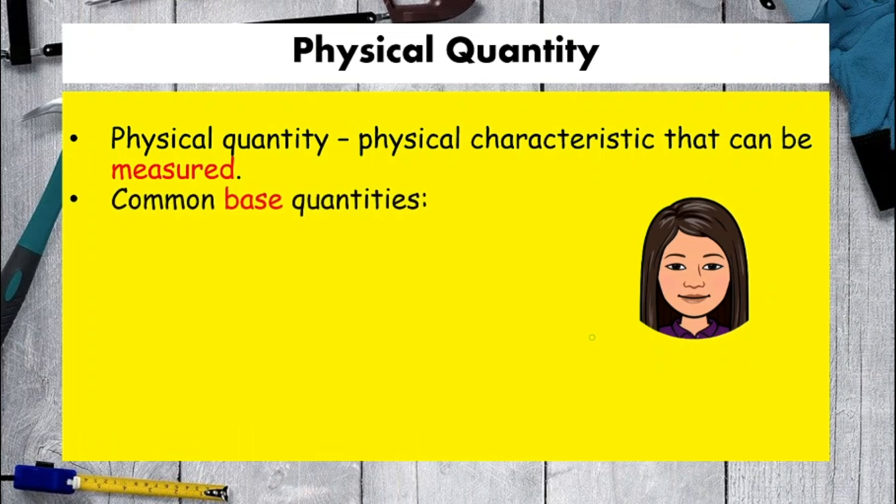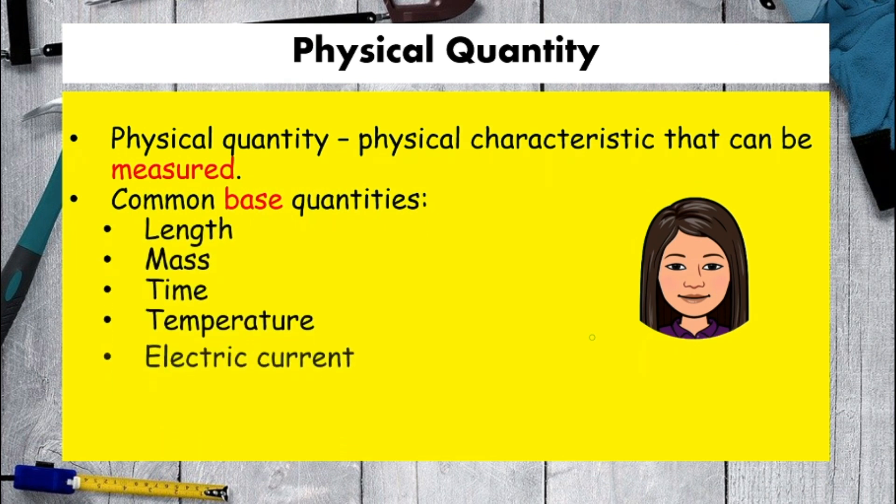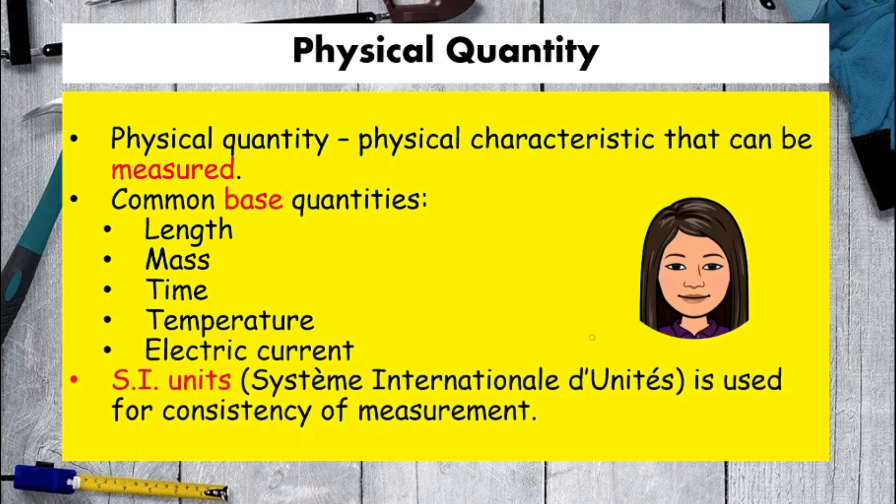There are five very common base quantities. They are length, mass, time, temperature, and also electric current. When we represent them in numbers, it follows by units. And we have SI units. SI unit is used for consistency of measurement. What is SI units for the five base quantities? Let's have a look.